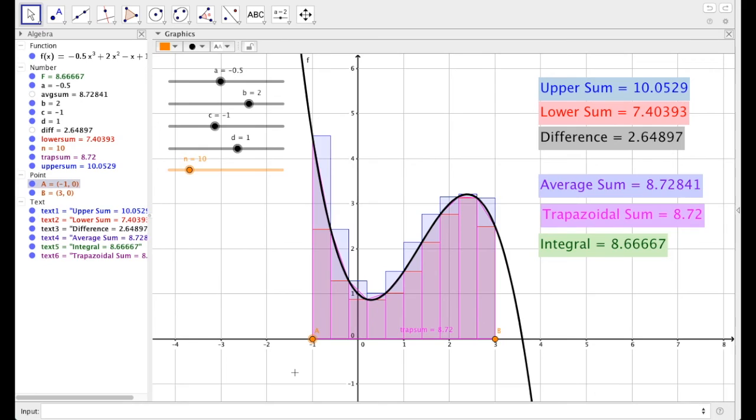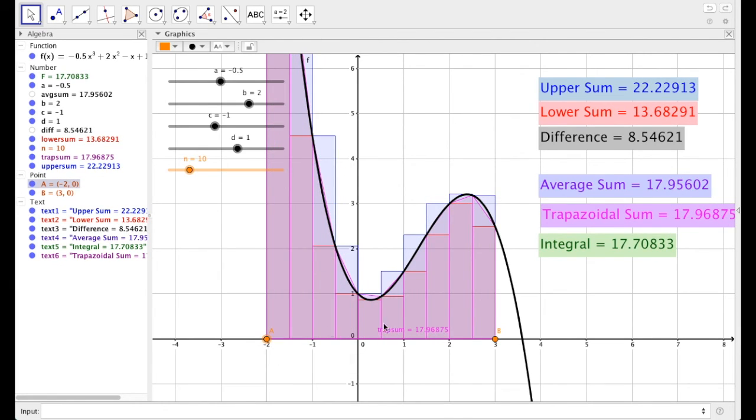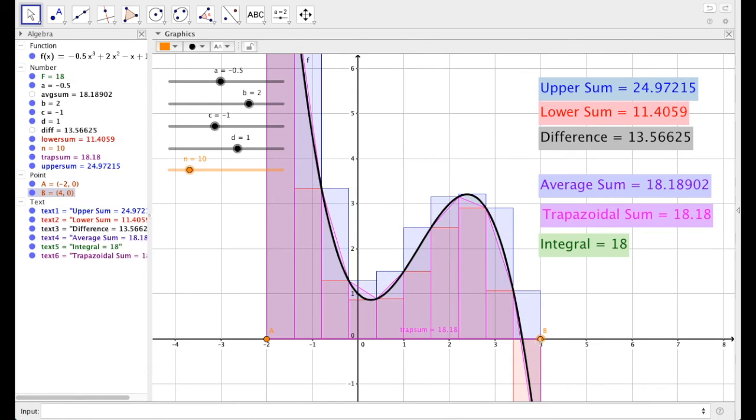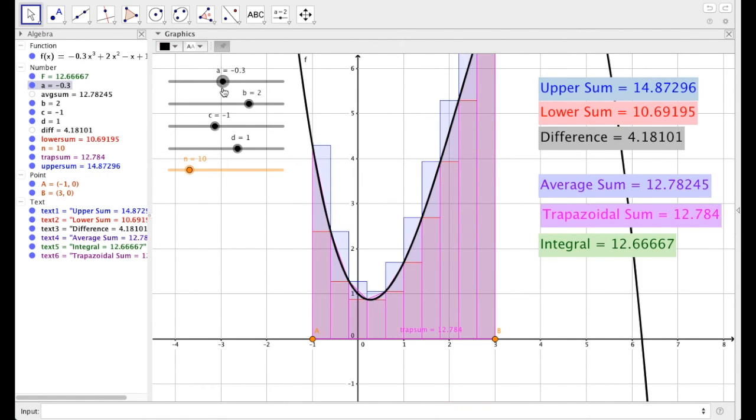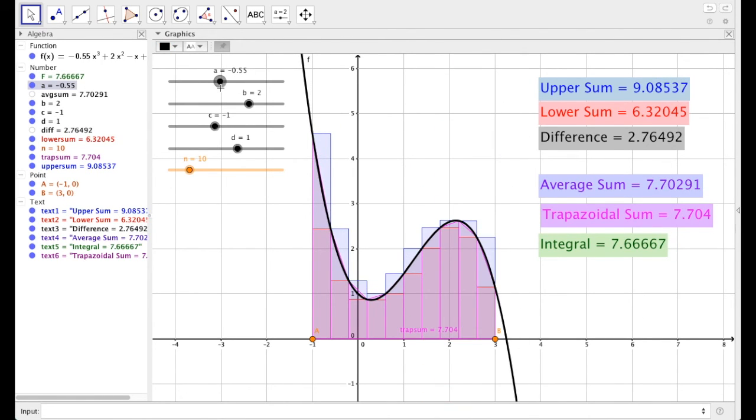A few other things that you could do. If you want to change the bounds of integration, you can just move a and b around. So let's say you wanted to go from negative 2 to 4. You can do that. And notice all these numbers on the right update live. Or suppose you had a different cubic, or maybe not even a cubic at all, but you had a quadratic or a linear function. You can just move these sliders. And again, all of our estimates change along with it.